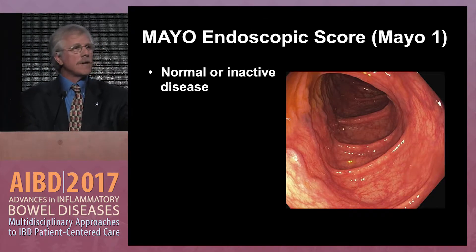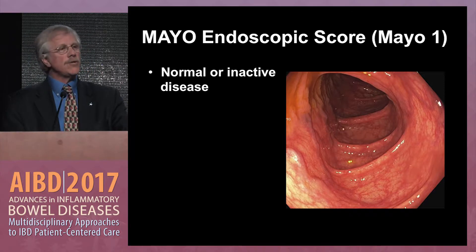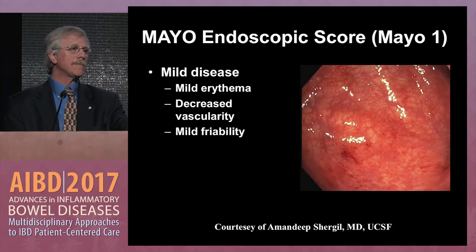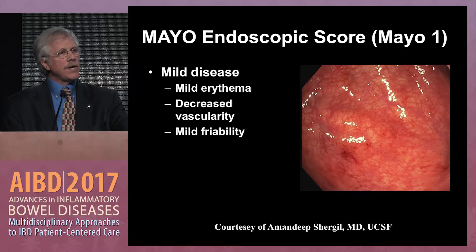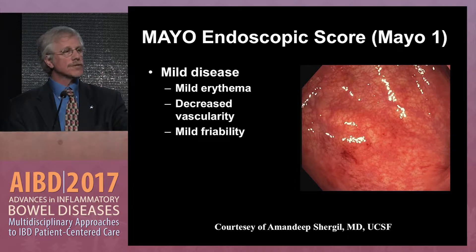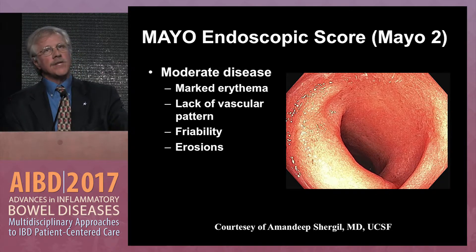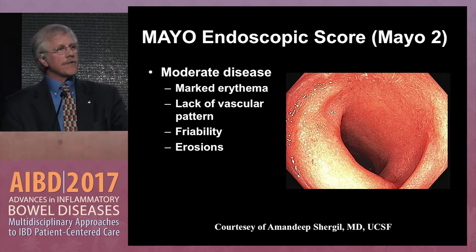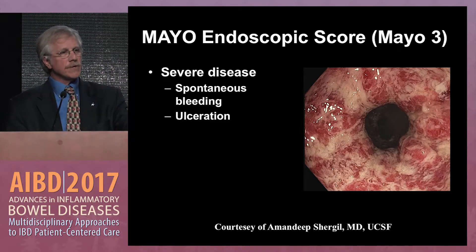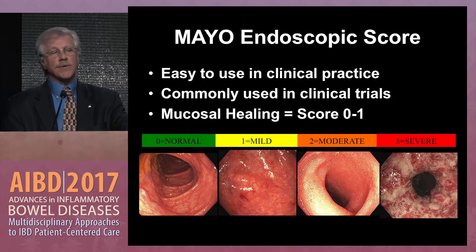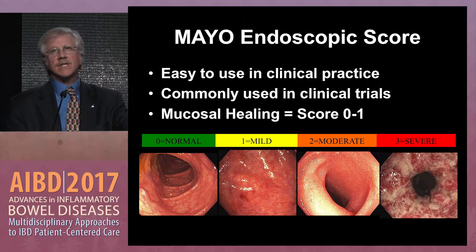Looking at Mayo score images: Mayo 0 is a completely normal exam. Mayo 1 is mild disease — mild erythema, perhaps some decreased vascularity, some friability as you move the scope through the rectum and sigmoid. A Mayo 2 score shows marked erythema, lack of vascular pattern, friability and erosions. And then finally a Mayo 3 represents severe disease. The Mayo endoscopic score is easy to use in clinical practice and is used in clinical trials. As of 2017, both a Mayo 0 and a Mayo 1 are considered mucosal healing.